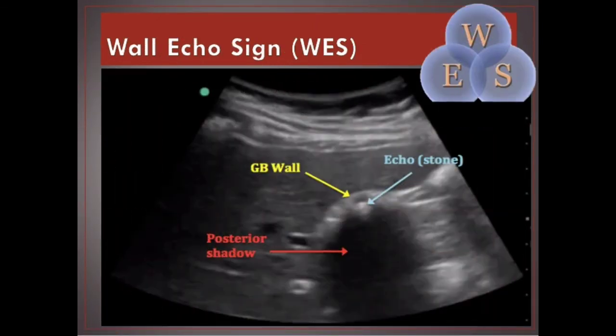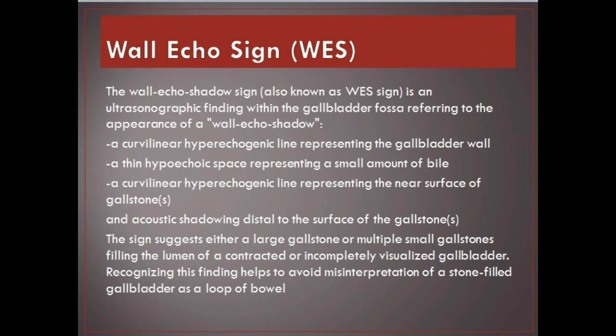The wall echo shadow sign, also known as the WES sign. It is an ultrasonographic finding within the gallbladder fossa referring to the appearance of: a curvilinear hyperechogenic line representing the gallbladder wall, a thin hypoechoic space representing a small amount of bile, a curvilinear hyperechogenic line representing the near surface of the gallstone, and acoustic shadowing distal to the surface of the gallstone. The sign suggests either a large gallstone or multiple small gallstones filling the lumen of a contracted or incompletely visualized gallbladder. Recognizing this finding helps to avoid misinterpretation of a stone-filled gallbladder as a loop of bowel.